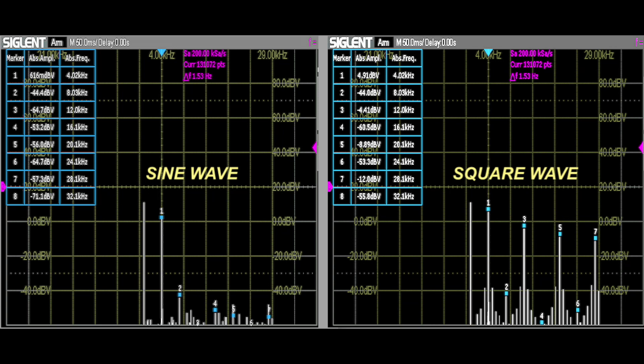Unlike the spectrograph, which displays frequency over time, the FFT represents amplitude over frequency. This sine wave's fundamental frequency is set to four kilohertz.